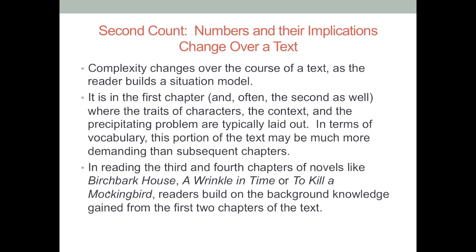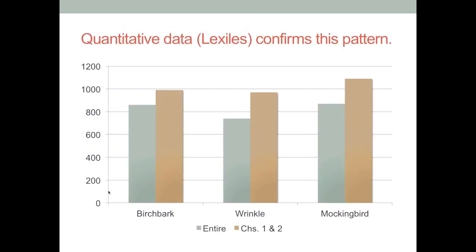What I'm doing is actually a qualitative analysis, but it turns out that quantitative data also confirm this pattern. In the green you're seeing the entire lexile for these three texts, and in the gold-brown you're seeing the lexile for the first two chapters. What you're seeing is that the first two chapters are substantially more difficult than the entire text. I'm going to use data from these first two chapters to illustrate interpretations of sentence length and vocabulary. Texts aren't all complex in qualitative or guided reading features — sections of text can vary as well.